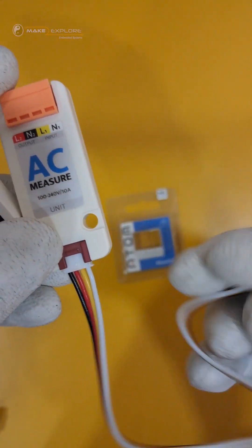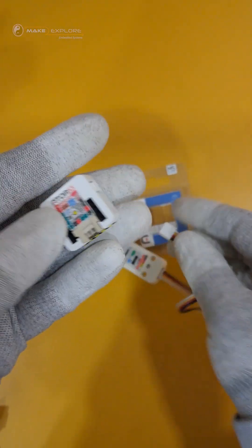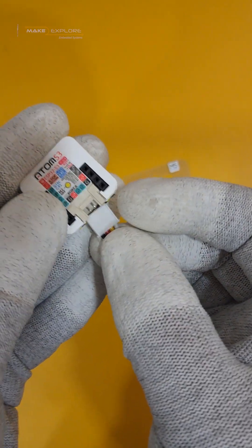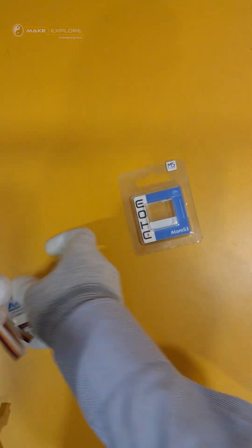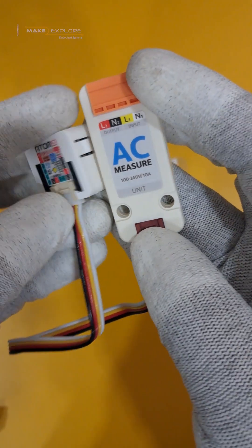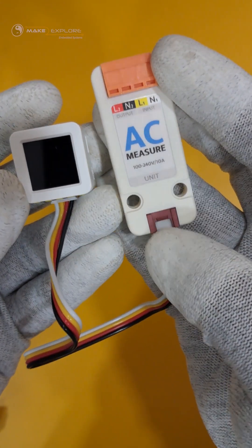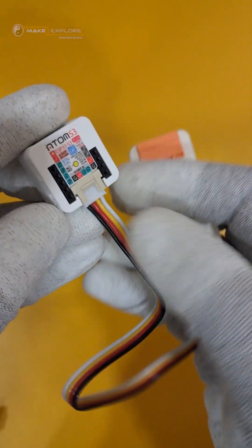For example, this is an AC voltage measurement unit. You can interface it with Atom S3 like this, and use this interfacing to measure AC line voltages. You can also show those readings on this tiny display of this board. How cool is that?